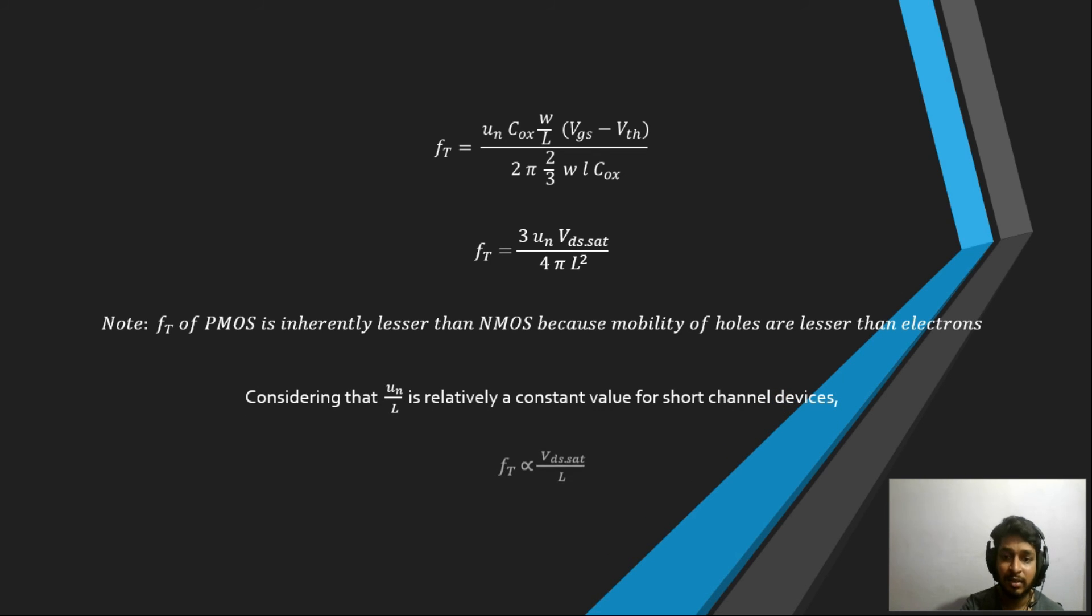So if we reduce the channel length, the mu N reduces because of the electric field. So we can consider mu N by L as relatively as a constant, and if we do that, we will get this equation, which is fT is proportional to VDSsat divided by L. And also I forgot to tell you that fT of the PMOS is inherently lesser—the transition frequency of the PMOS is inherently lesser than that of NMOS because of the mobility of the holes is pretty much lesser than the mobility of electrons. That should be taken into consideration as well. Now, as I said, fT is proportional to VDSsat divided by L. To give you an idea, the fT of 180 nanometer technology node ranges from between 50 gigahertz to 80 gigahertz.